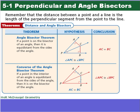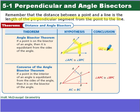Now we have two theorems having to do with angle bisectors. Remember the distance between a point and a line is the length of the perpendicular segment — that's going to be the shortest distance. The first is the angle bisector theorem: if a point is on the bisector of an angle, then it's equidistant from the sides of the angle. It cuts angle P into two equal parts. The converse says if the perpendicular from this side to the line is congruent to the perpendicular from this point to the other side, then this has to be an angle bisector, meaning angle APC is congruent to angle BPC.